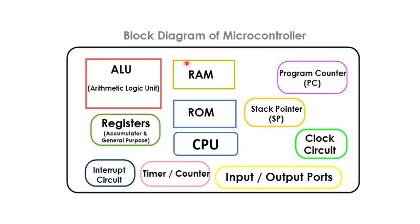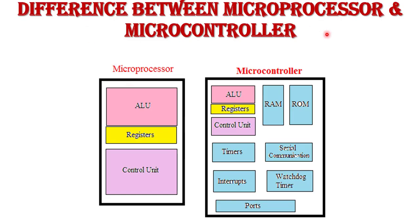Now, the difference between microprocessor and microcontroller. On the left-hand side is the microprocessor block diagram and on the right-hand side is the microcontroller block diagram. A microprocessor has ALU, registers, and control unit, with separate memory, separate input/output port blocks, and separate interrupt, timer, and clock circuits — everything is separate. But in a microcontroller, all functional blocks are on a single chip.